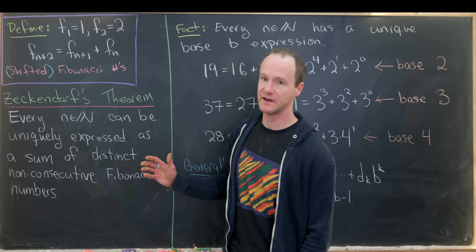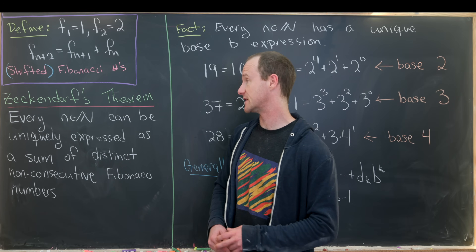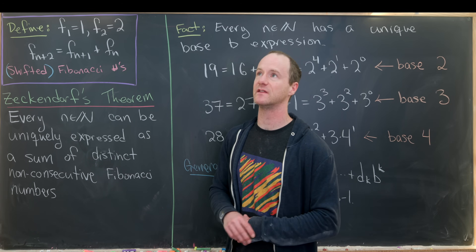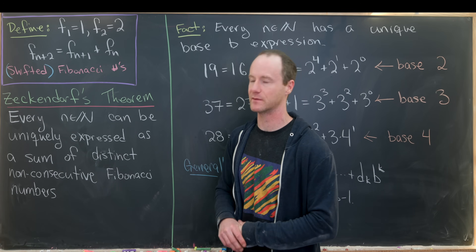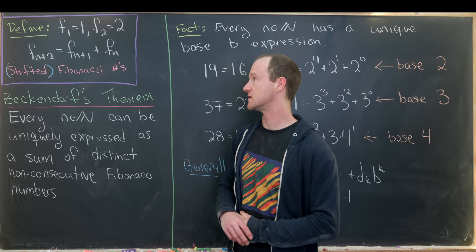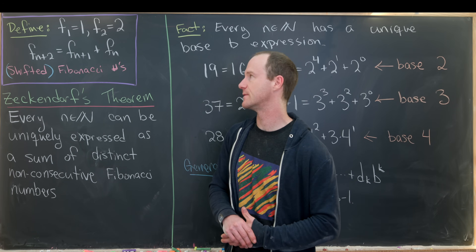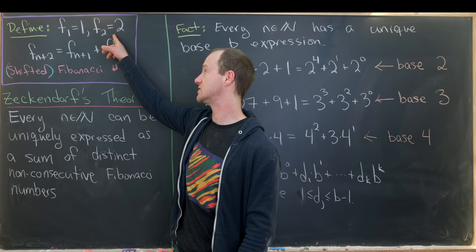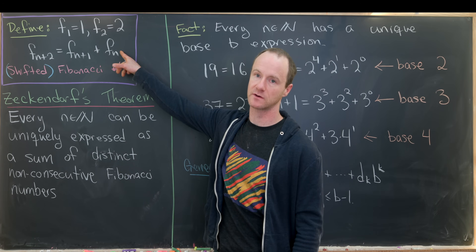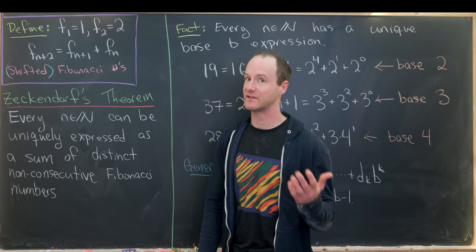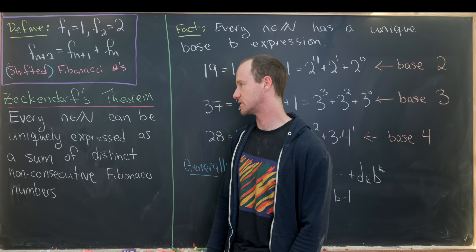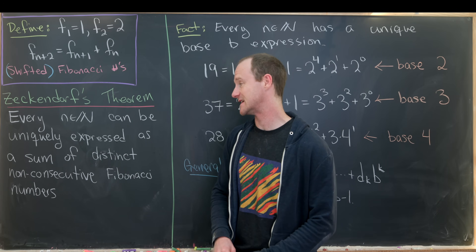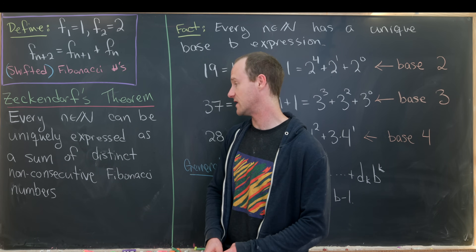What we'll show today — sometimes thought of as a base Fibonacci expansion — is also known as Zeckendorf's theorem. It involves redefining the Fibonacci numbers very slightly, shifting them by one. Instead of seeds 1 and 1, we take them to be 1 and 2: F₁ = 1, F₂ = 2, and then let the recursion take over. Zeckendorf's theorem says every natural number n can be uniquely expressed as a sum of distinct non-consecutive Fibonacci numbers.